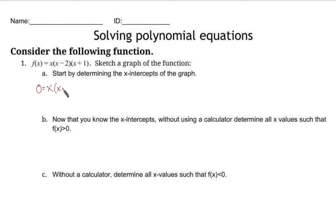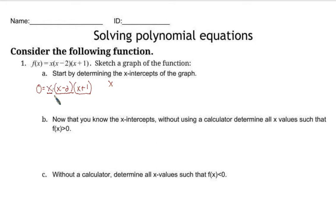So what this means is, whatever I put in for x, the output should be 0. I set this equal to 0. You might be tempted to multiply this out, but it's so much easier when it looks like this. Let's view it as three things multiplied together. We're supposed to get 0 as the output, which means that one of these three things has to be 0: x has to be 0, or x minus 2 has to be 0, or x plus 1 has to be 0.